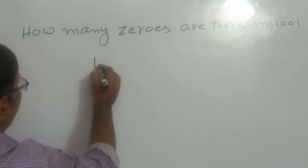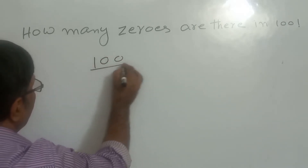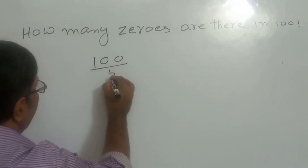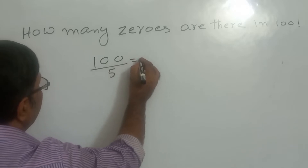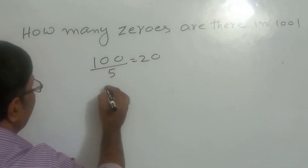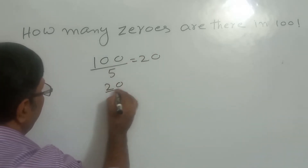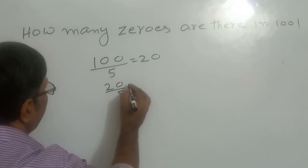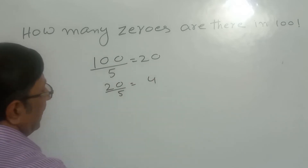For this type of question, divide the given factorial by 5 and find the quotient — that is 20. Again divide the quotient by 5: 5 times 4 is 20, so 4 is the quotient.